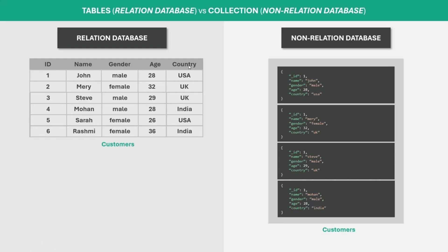In relational databases, we store data in a table and each row represents a related data entity. But in non-relational databases like MongoDB, we do not store data in a table — we store data in a collection. The collection in MongoDB is equivalent to a table in a relational database. Each collection consists of documents which store the data related to a given entity, so a document is equivalent to a table row. In a NoSQL database, instead of tables, we have collections, and a collection is a collection of documents.